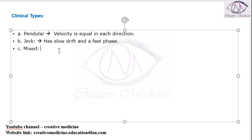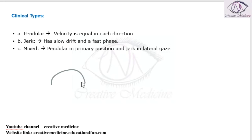Whereas mixed nystagmus is pendular in primary position and jerk in lateral gaze. In pendular, when there is to and fro movement of the eye, the velocity is the same in both directions. In jerk, there is slow velocity and fast velocity both.